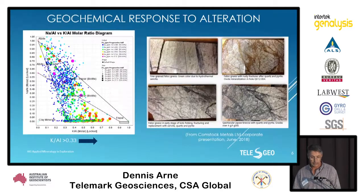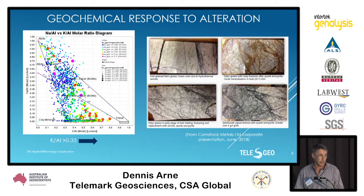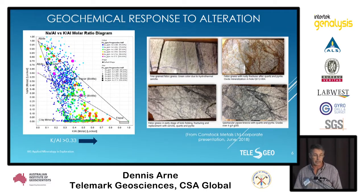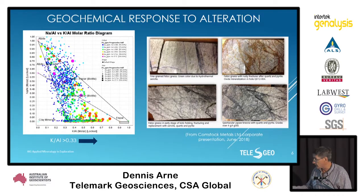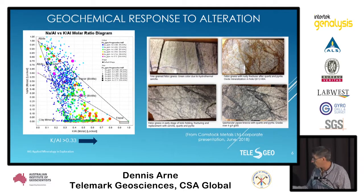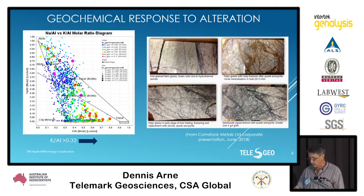If we plot the geochemistry — this is assay geochemistry data supplied by Comstock Metals — and look at a molar ratio plot of sodium against potassium, with sodium on the y-axis and potassium on the x-axis, we can see a good spread in data showing wall rock alteration. Some samples move up towards the albite node, indicating albitization, but the majority of mineralized samples lose all their sodium — feldspar destructive alteration. The color and size of the points relate to gold content at one-meter intervals. You can see very obvious sericitic alteration associated with the wall rock alteration.